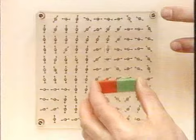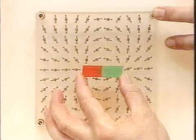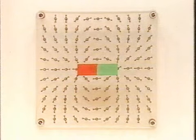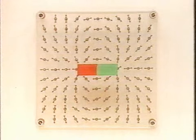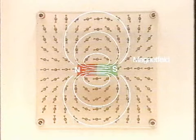Das sind also jeweils die Nordpole dieser kleinen Magnetchen. Ich bringe nun einen Stabmagneten hier auf. Dann sehen wir, dass sich diese kleinen Magnetchen einordnen. Sie zeigen uns den Verlauf, die Struktur des Magnetfeldes an.